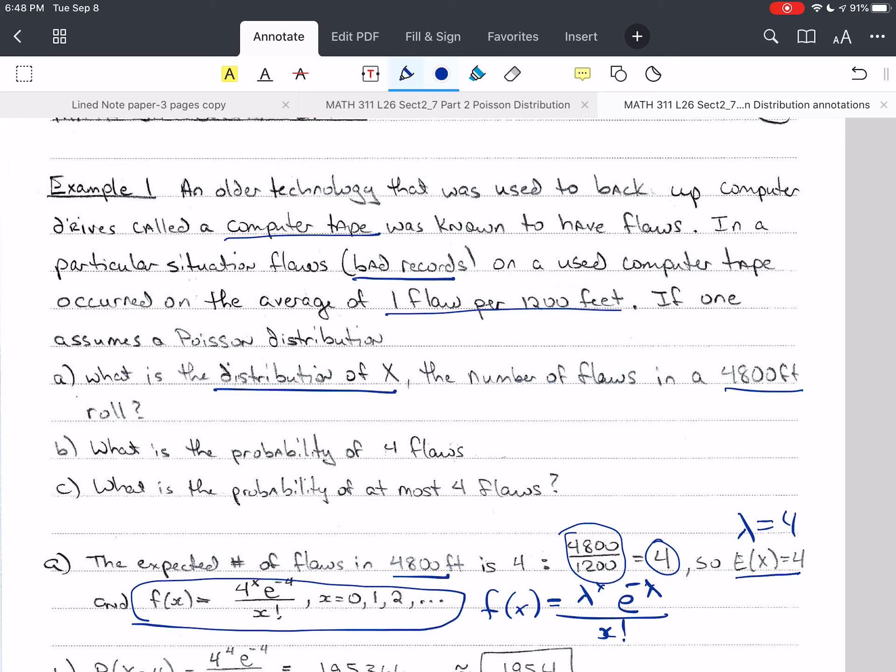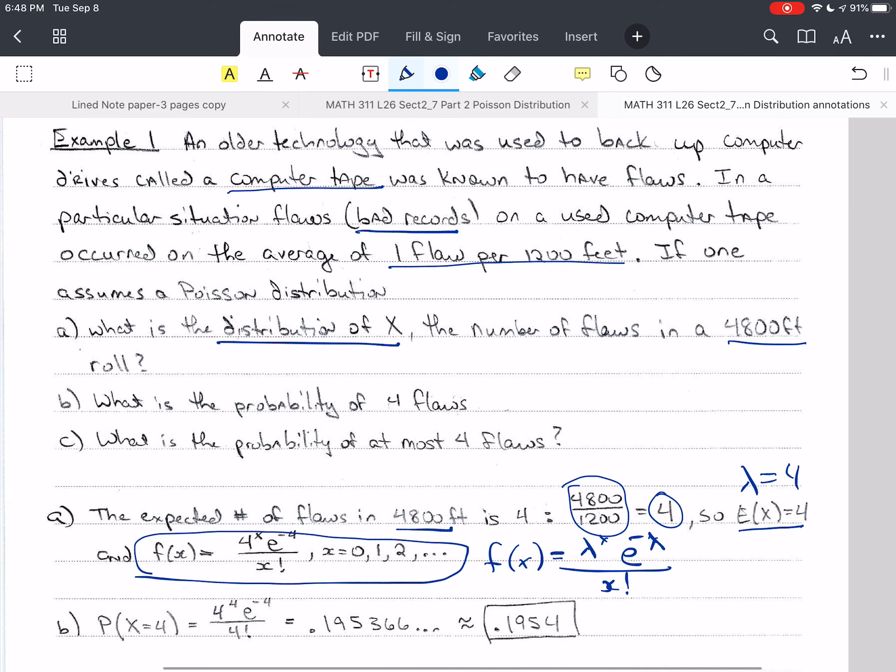The next question is, what's the probability of getting 4 flaws? So that's the probability that X is equal to 4. So we plug in 4 for lambda, I mean for X. We have 4 for lambda as well. That gives us 0.195366, and we round that to 4 decimal places and get 0.1954. So a little over 19.5% chance of getting 4 defects.